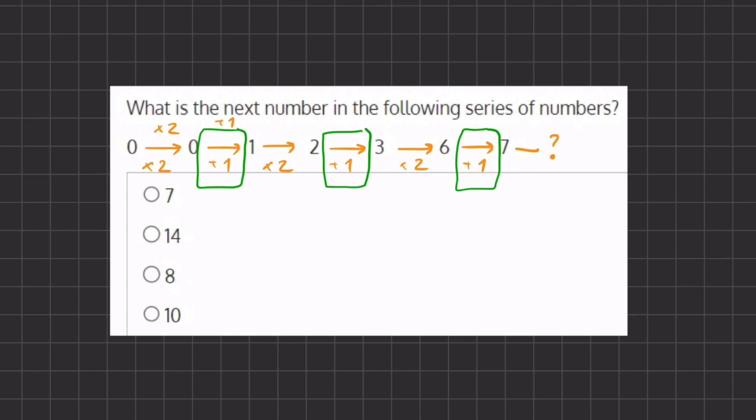So our next transition, if we added 1 here, our next transition should be multiplying by 2. If we have 7 times 2, we get 14, which is going to be the next number in the following series. This corresponds with answer B.